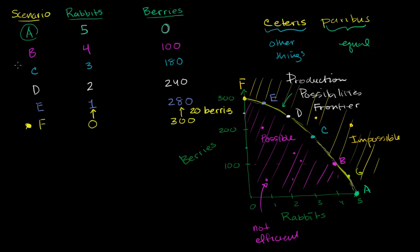Now, let's keep going. What happens if I'm in Scenario E? I'm already on average eating one rabbit or finding one rabbit a day, and I want to go to two rabbits a day. What am I going to give up? Well, now I am going to give up 40 berries. 40 berries. This is interesting.